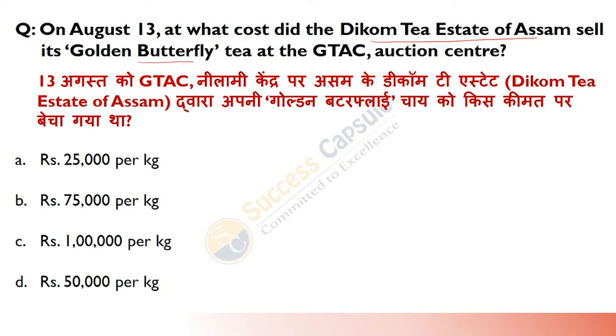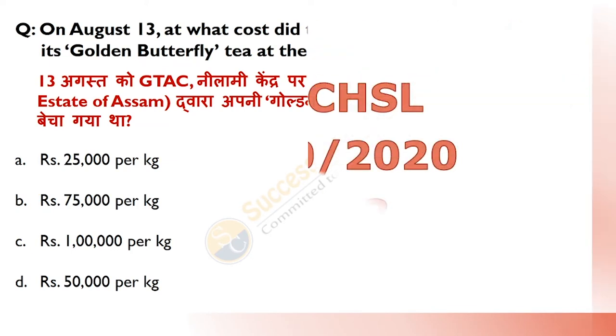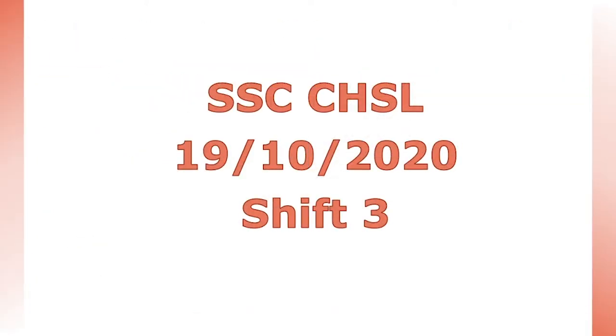Answer is B — 75,000 rupees per kg. With this, Shift 2 concludes. Now we will discuss Shift 3.